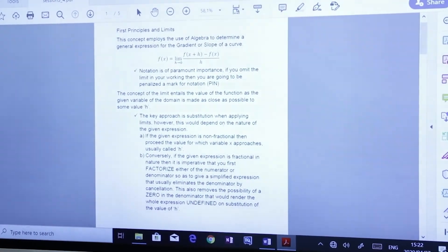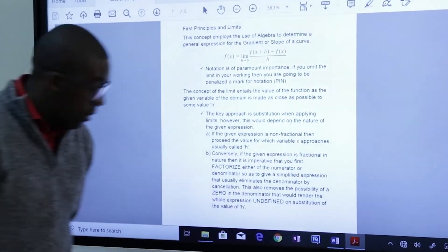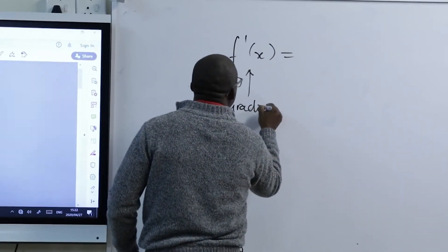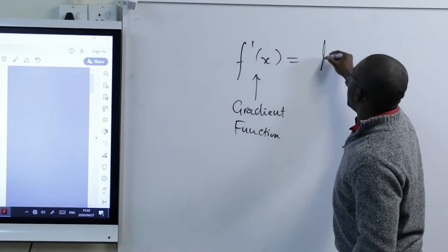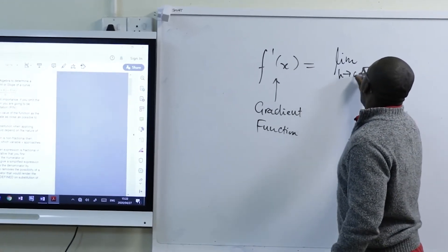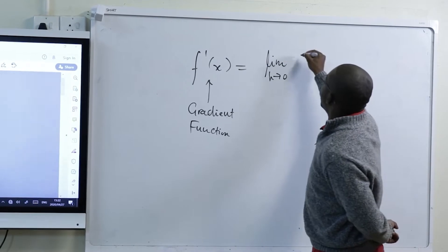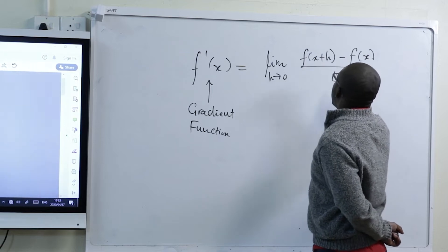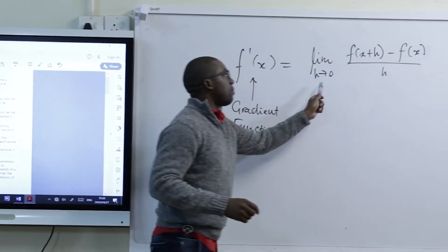This concept employs the use of algebra to determine a general expression for the gradient or slope of a curve. f prime of x, which is the gradient function, can be found by saying the limit as h approaches zero of f of x plus h minus the original f of x, all over h. That is the formula for first principles.